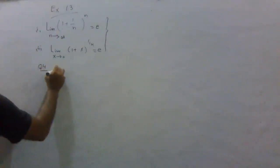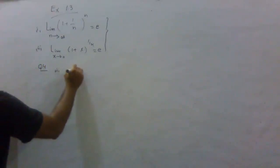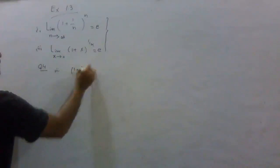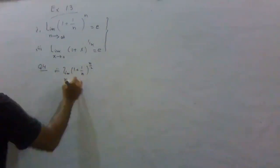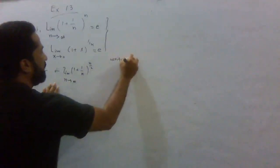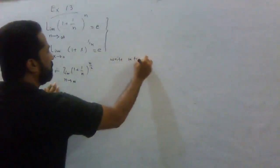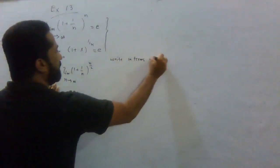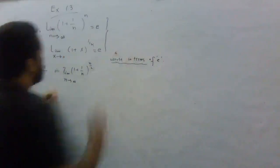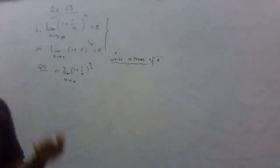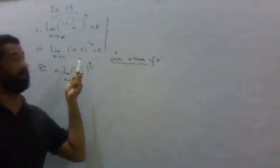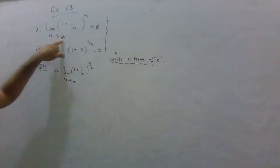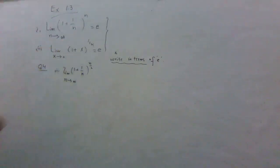Question number 4, part 2: evaluate limit as n approaches infinity of (1 + 1/n)^(n/2). We have to write these expressions in terms of e. We will use two standard formulas: one where the limit has n approaching infinity, and one where the limit has x approaching 0.